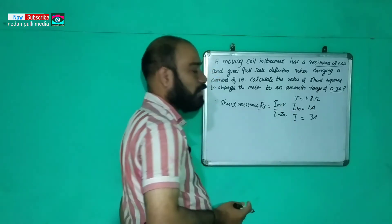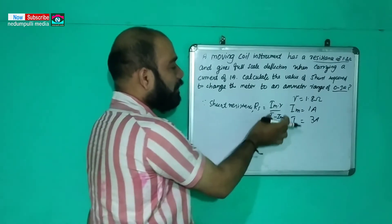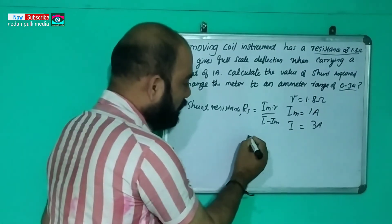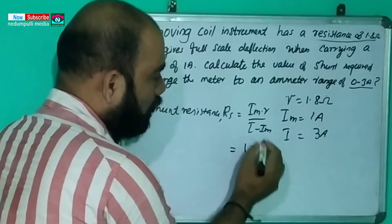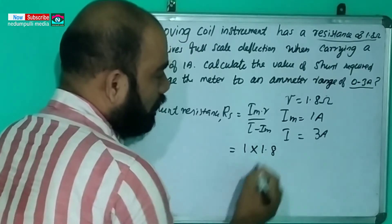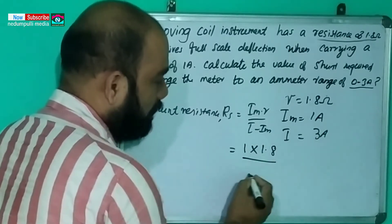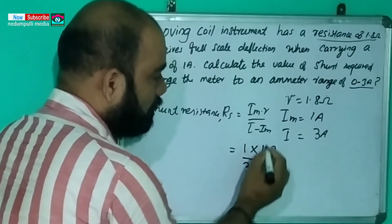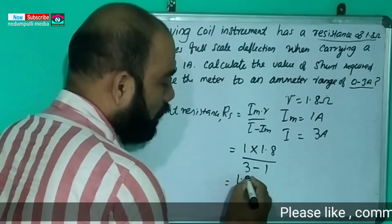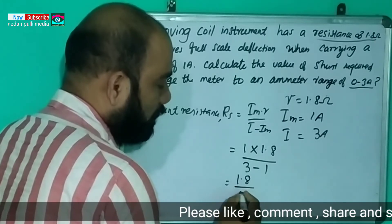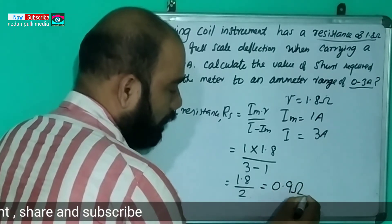In this equation we have 3 terms. Let's simplify the value of shunt. Im is equal to 1, R is 1.8, so we have 1 into 1.8 divided by I minus Im, which is 3 minus 1, equals 1.8 divided by 2, which is equal to 0.9 ohms.